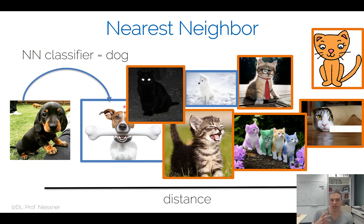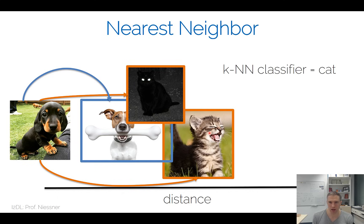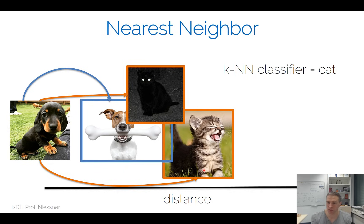For instance, if we set k to three in a k-nearest neighbor classifier and take the three closest images — one, two, three — in this case we would say it's a cat, because two images refer to a cat and one refers to a dog. So the majority vote says cat. Of course in this example that's wrong, but you can imagine how this changes with a larger k, giving us a little more robustness to the respective data.